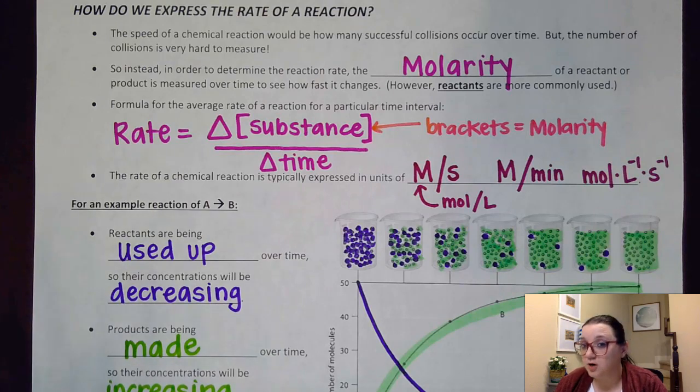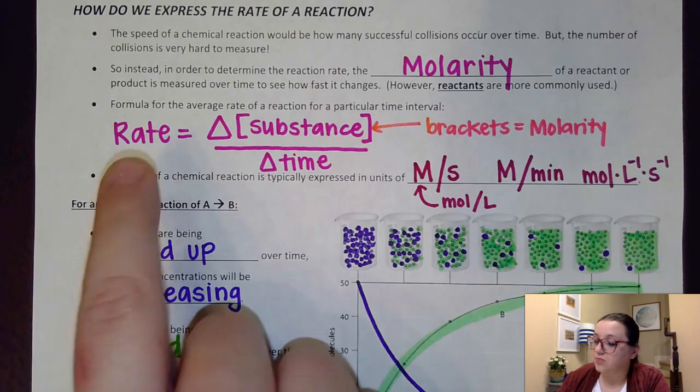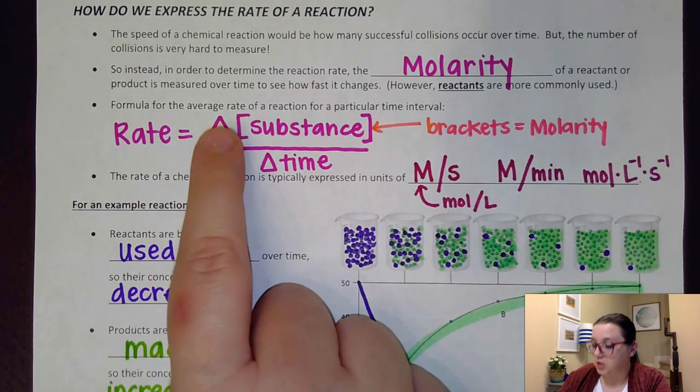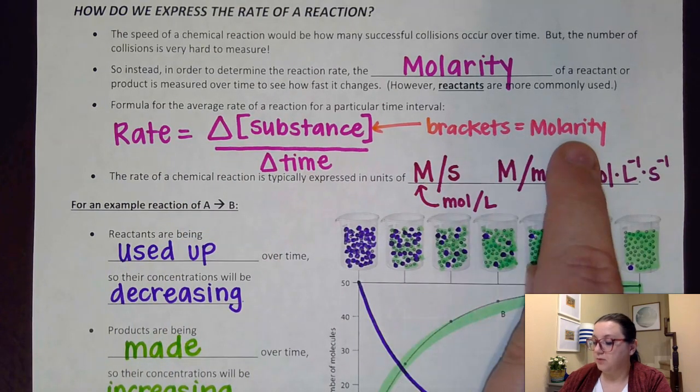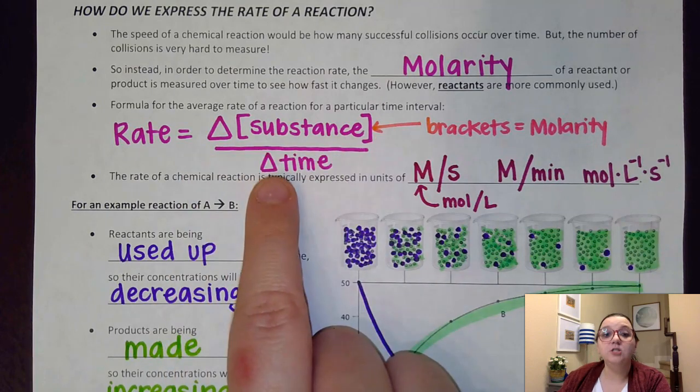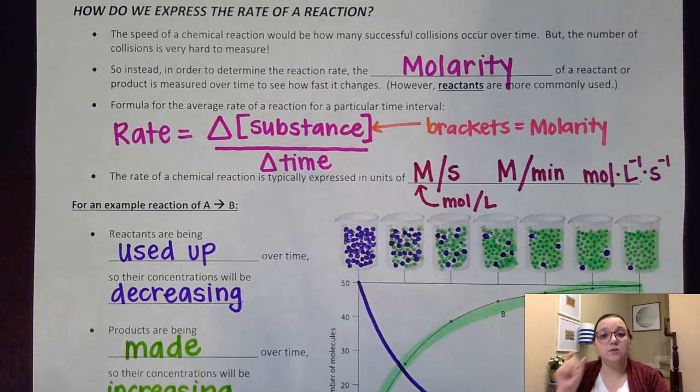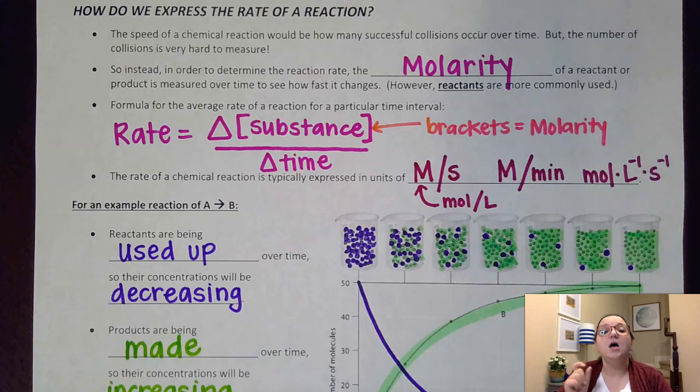Now I will say this, you could measure a reactant or a product, but it is more common to measure how reactants are changing. Our official formula for doing this is that the rate is equal to the change in the molarity of a substance. So again, the brackets here indicate molarity over the change in time. So you could do this for various time segments. You could either use seconds or minutes or whatever you chose to use.